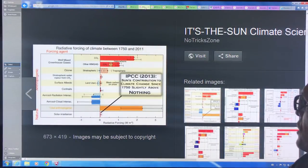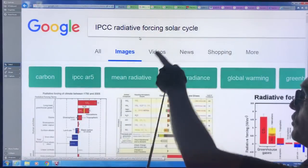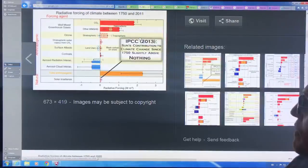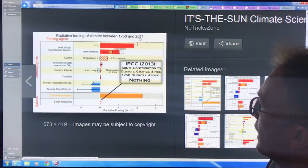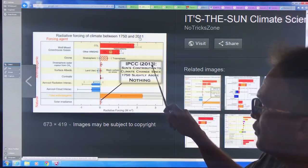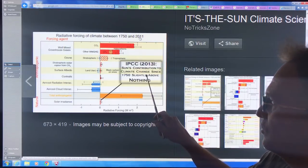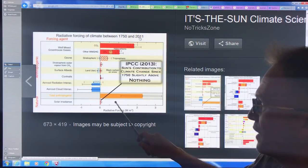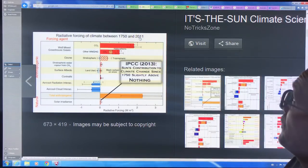Here's another image from this same site. This is from the IPCC 2013. The sun's contribution to climate change since 1750 is slightly above nothing. I want to emphasize this again, it's a very, very small effect.